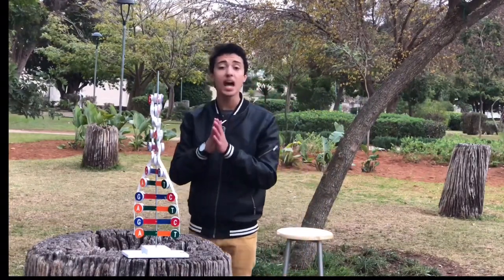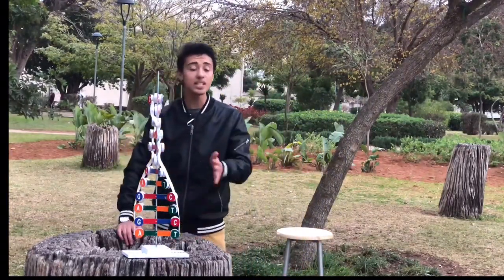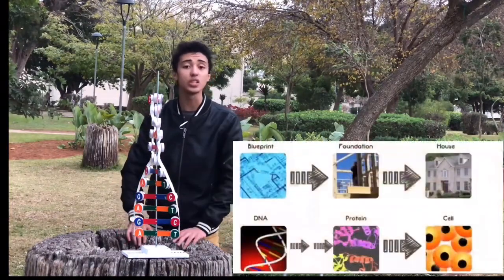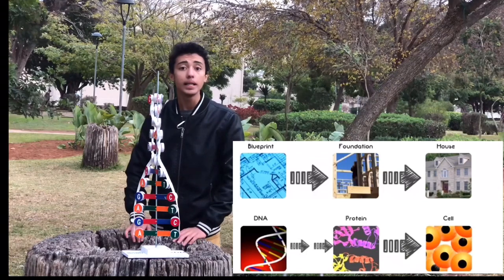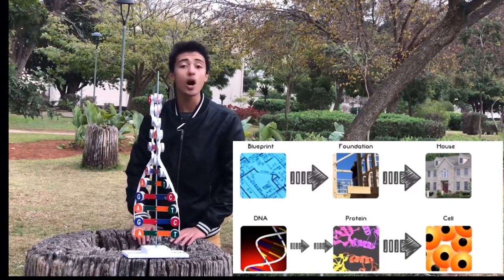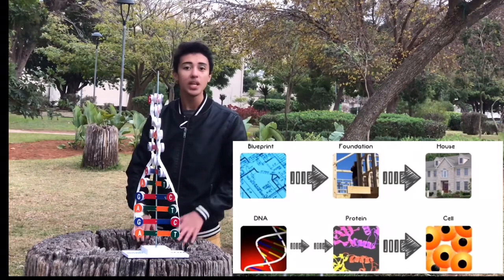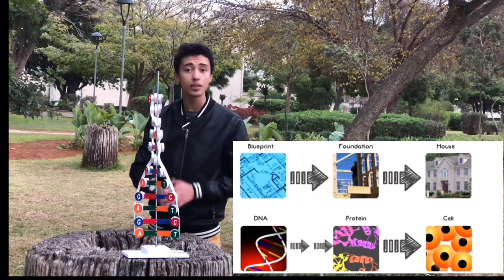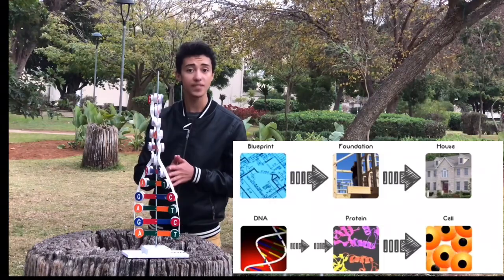DNA is a blueprint for the development and function of living things on Earth. Just like a blueprint is a map used to create a foundation which supports a house, DNA is the blueprint of every cell in every organism. Using the DNA blueprint, proteins can be made, which make up all the molecules and structures of a cell.